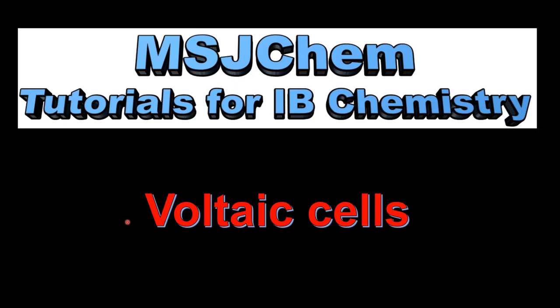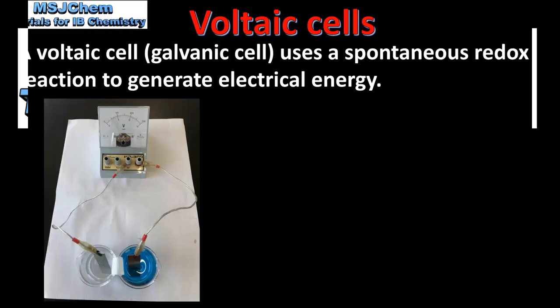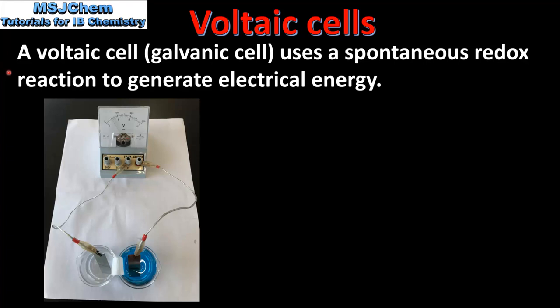This is MSJChem. In this video I'll be looking at Voltaic Cells. A Voltaic cell, which is also known as a Galvanic cell, uses a spontaneous redox reaction to generate electrical energy.